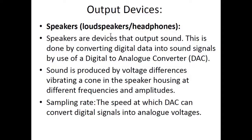Next we have speakers, loudspeakers, headphones — any type of device that outputs sound. This is done by converting digital data into sound signals using a DAC (digital to analog converter). Sound is produced by voltage differences vibrating a cone in the speaker housing at different frequencies and amplitudes. Speakers are essentially the exact opposite of a microphone: in a microphone, vibrations cause a cone or diaphragm to move, which is attached to a coil wrapped around a magnet, and when the coil moves in a magnetic field an electric charge is produced.